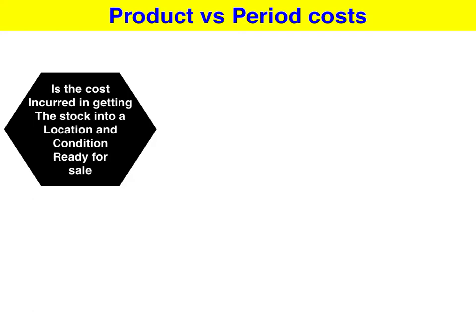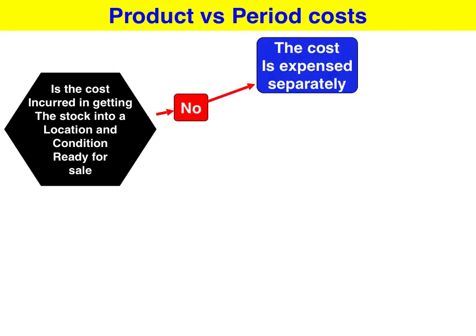When determining if a cost incurred is a product cost, period cost, or neither, ask yourself these questions. Is the cost incurred in getting the stock into a condition and location ready for sale? If the answer is no, it's neither a product nor period cost, and that cost will be expensed separately after we've calculated the gross or adjusted gross profit.